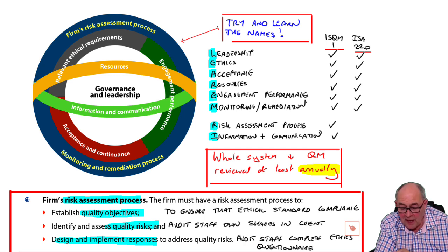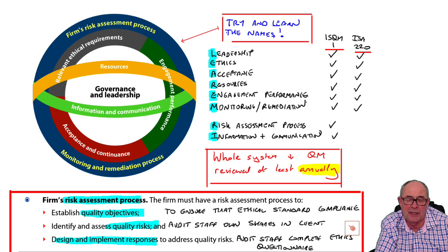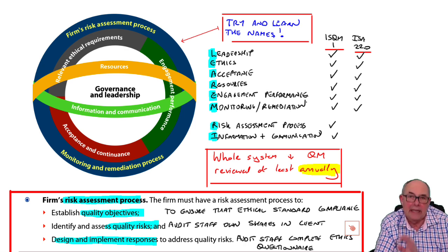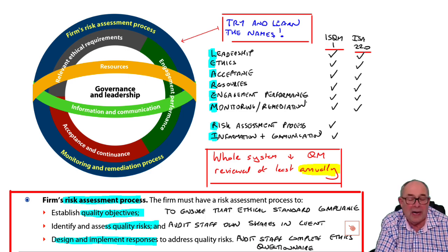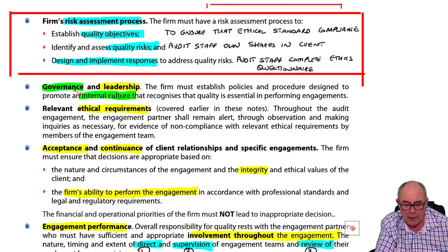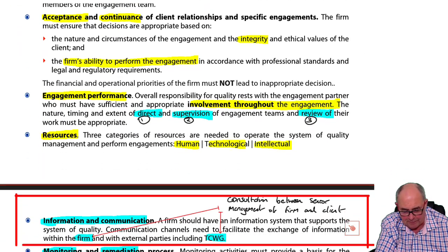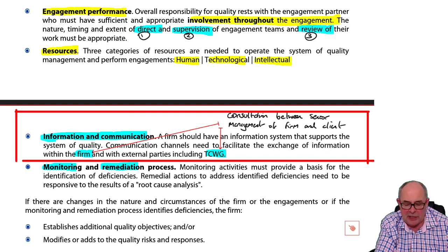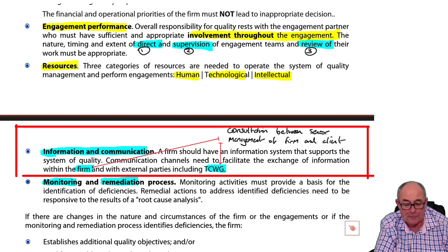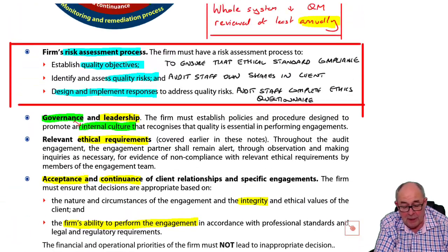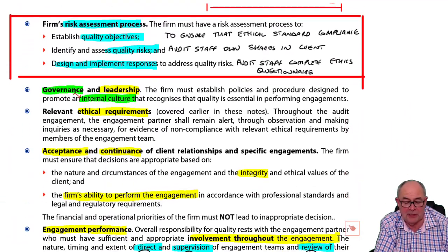The firm is under obligation to look at the whole system of quality management and review it every year. In the notes, the ones unique to ISQM 1 are in a box: risk assessment process and information and communication, very much at the firm level. But let's think about what each of these components means.